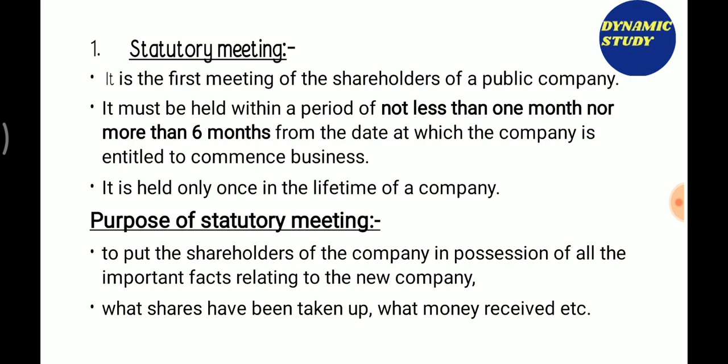The Statutory Meeting is the first meeting of the shareholders of a public company. It must be held within a period of not less than one month nor more than six months from the date at which the company is entitled to commence business — that is, from the date of commencement of business. It is held only once in the lifetime of a company.